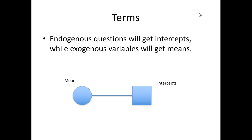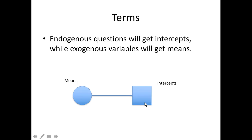Endogenous variables will get intercepts — any time you have an arrow coming in, you're going to get an intercept because they have an average score for that item, and we're predicting it, so it's y. Any time you have an exogenous variable, it's going to get a latent mean or a mean score. In CFA it's almost always a latent mean because we're talking about the latent variables. Exogenous variables get means estimated on them, hence latent means; endogenous variables get intercepts — different terms, but both are means.